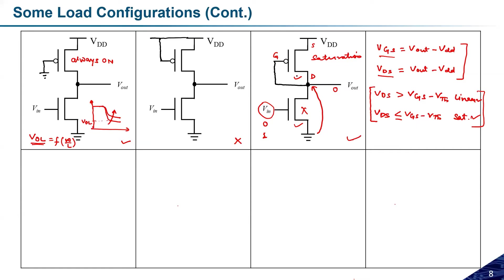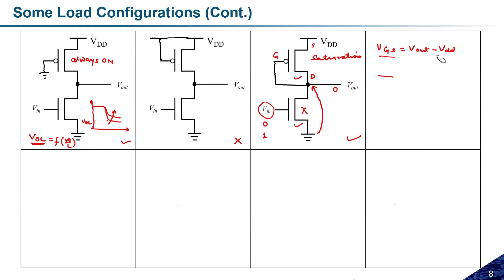So this circuit will act as an inverter, and the above pMOS transistor will be in the saturation region. That is why this circuit is also known as a saturation pMOS load inverter circuit. The output voltage depends on the sizing of these two transistors.